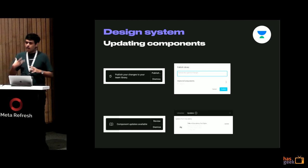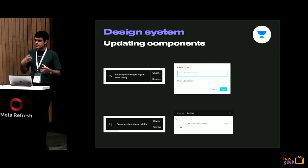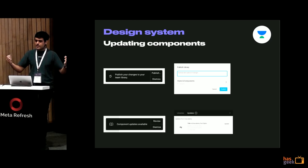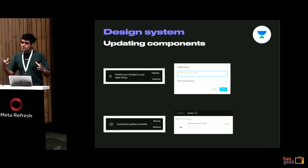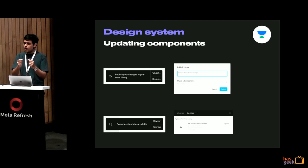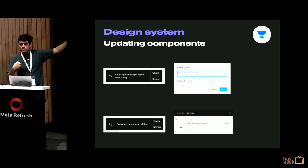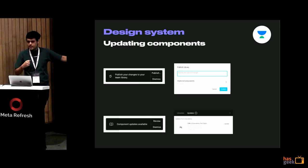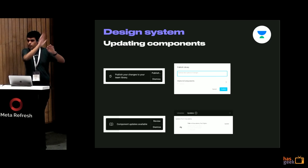Another challenge with design systems in Sketch is that since it's a native Mac app, files stored in Dropbox can sometimes have sync issues where an old version of a component is used instead of the new one. In Figma, when I go to the main component file and make a change, it asks: do you want to publish this? I type a message — similar to GitHub. Anybody who has used that component gets a notification in every open file saying 'component updates available,' and it updates throughout the entire file.